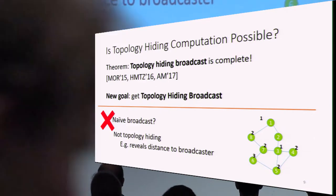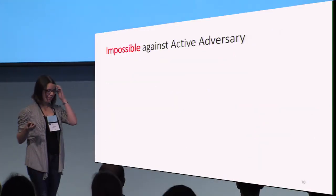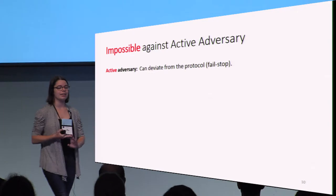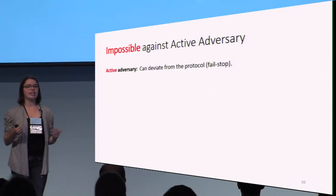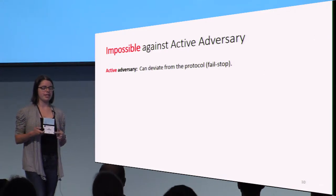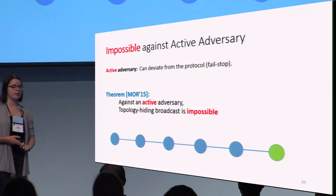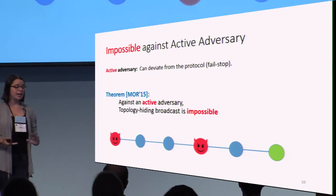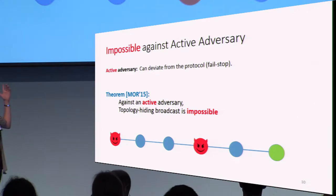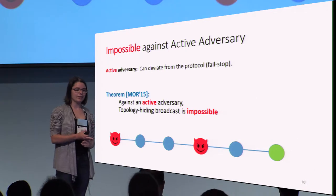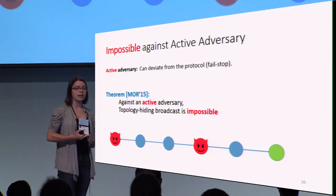It turns out that this is even harder than that. It's impossible to get topology hiding computation against almost any kind of active adversary. Say your adversary just has the power to abort, to stop communicating through his node. In 2015, Moran, Orland, and Richelson showed that against a fail-stop adversary, topology hiding broadcast is impossible. They did this by showing that if you have an adversary — like this middle adversary here — who can stop working and disconnect the graph, then this reveals something about the topology of the graph.